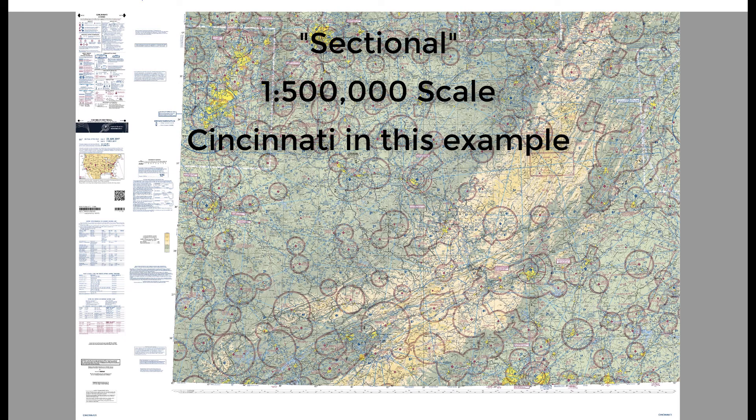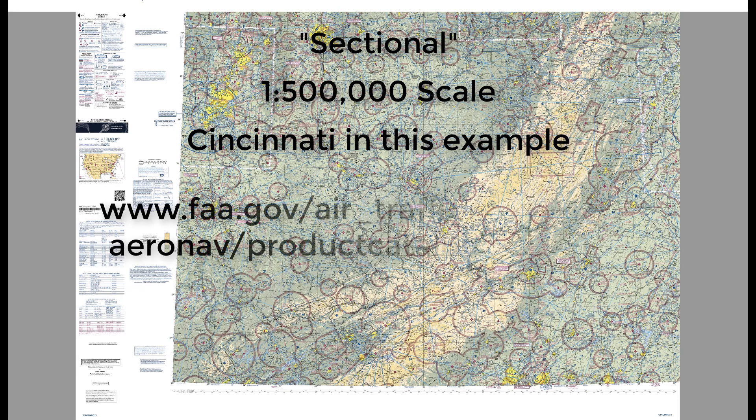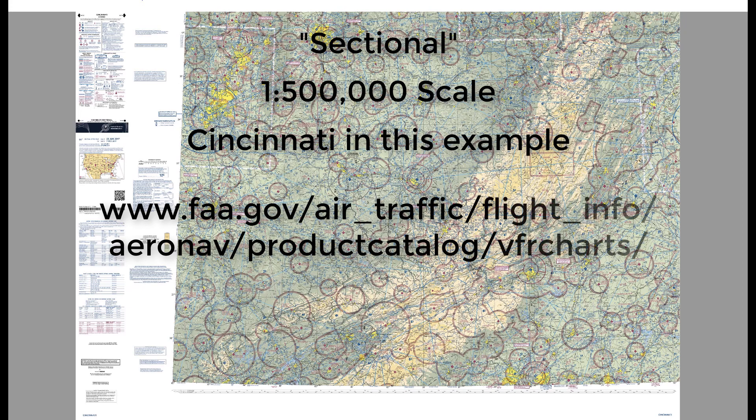Sectionals include terrain elevation, potential obstacles, and airspace classes. There are a number of sources for sectionals — you can purchase a hard copy from any physical or online pilot store, or download digital versions from the FAA in both PDF and GeoTIFF formats.